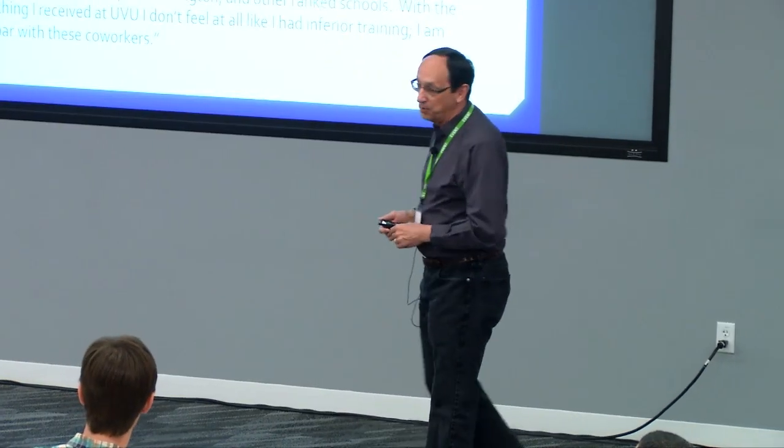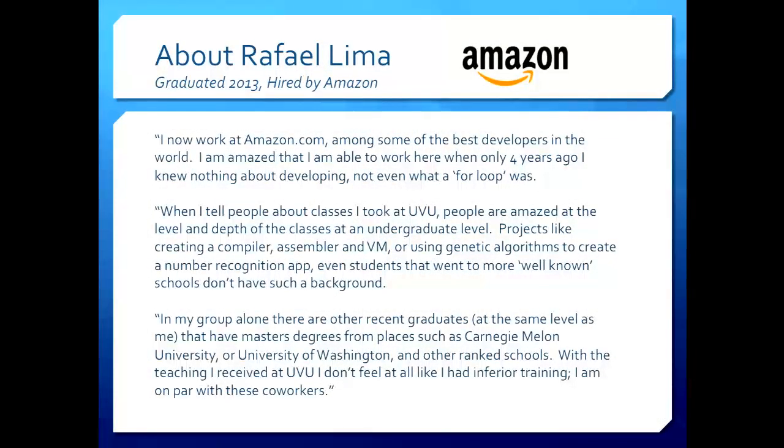We have two emphases, a CS emphasis and then the net-centric computing. That's where they do networking and web development and stuff like that. We also have a separate degree in software engineering and one in computer engineering. And as I said, 1,000 majors but only 40 graduate per year. But let me tell you about one of those graduates, Rafael Lima from Brazil. He graduated last year. He got hired by Amazon at six figures right out of school, $37,000 signing bonus and stock options. And he recently sent this to me. It's been about six weeks. And I want to read this.